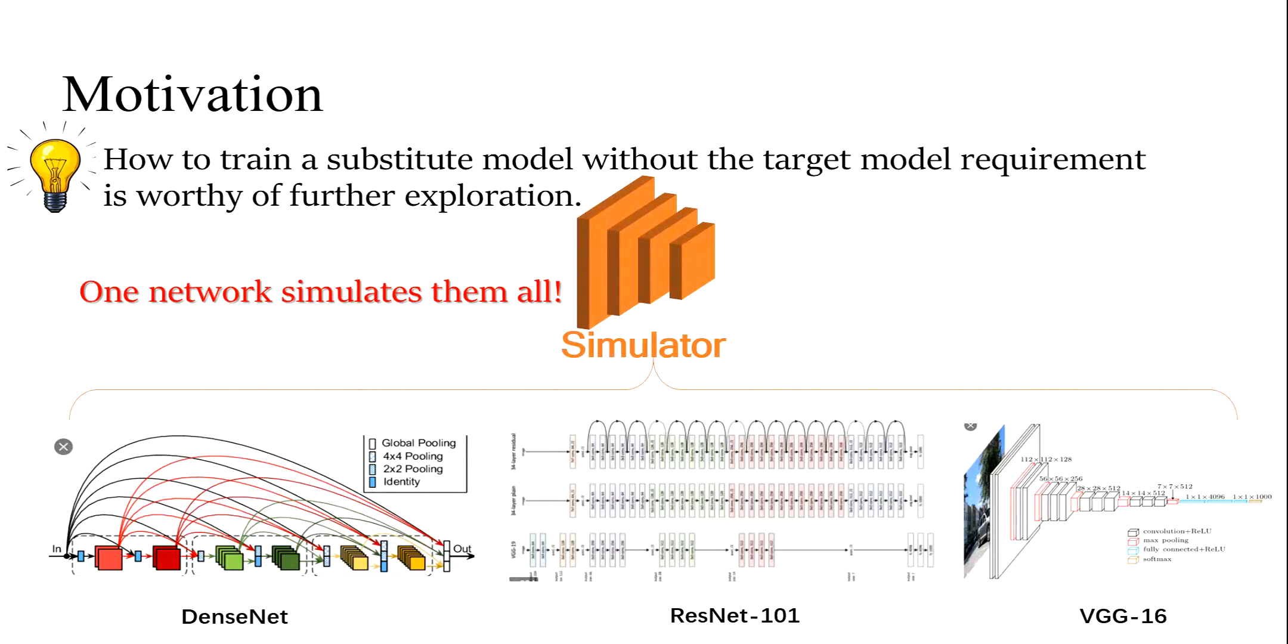How about how to train a substitute model without the target model requirement? We train one network that can simulate different unknown target models. That is to say, one network simulates them all.